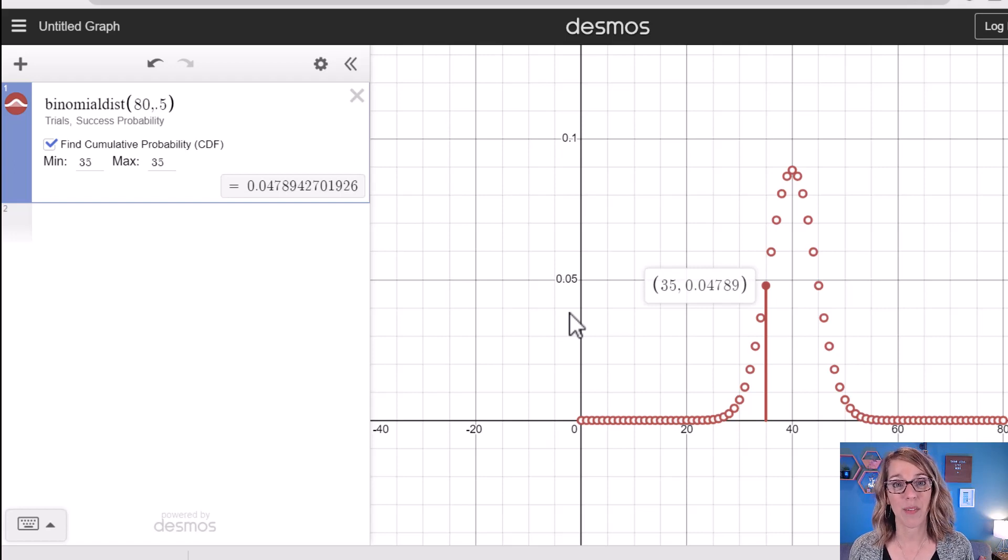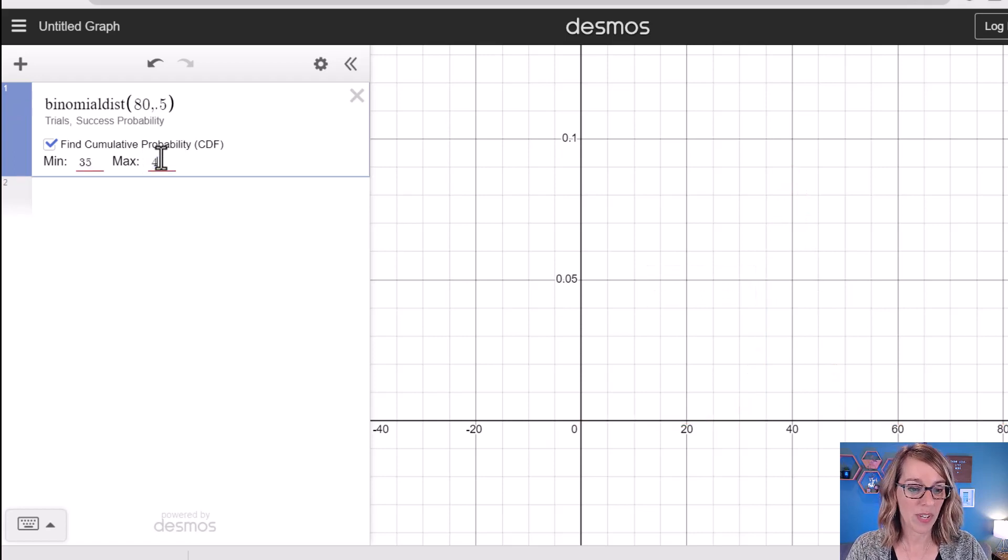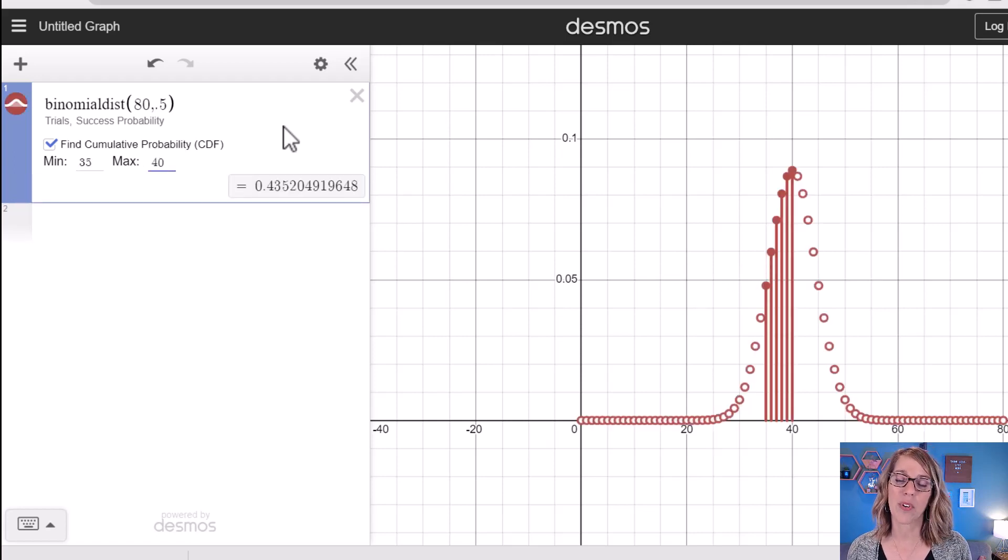Now I could also do something like the probability between 35 and 40. Let's include the 35 and the 40. So that would be 35 as the minimum, 40 as the maximum. It's labeled each of those bars and it added up that probability. So cool, right? So that's 0.435.